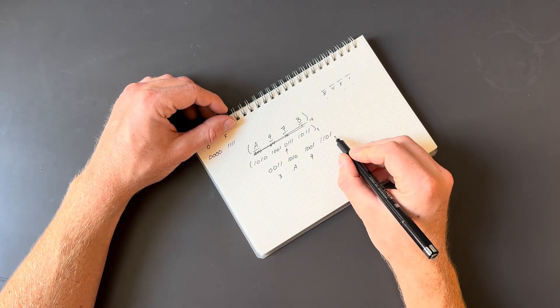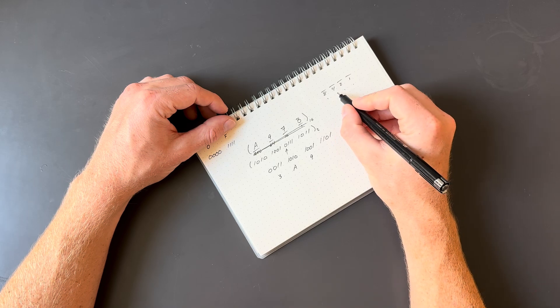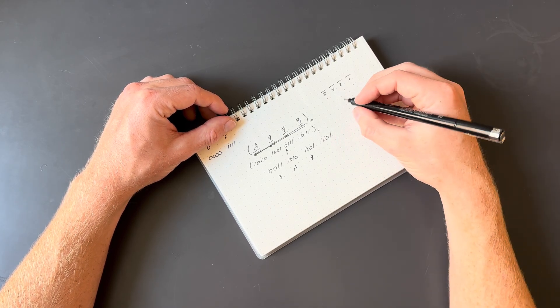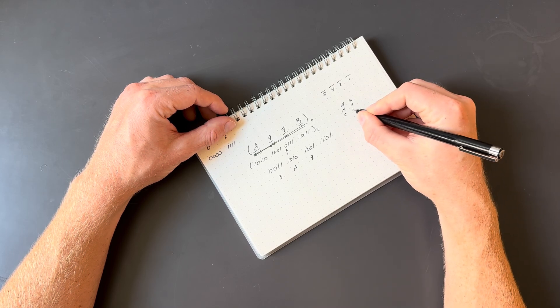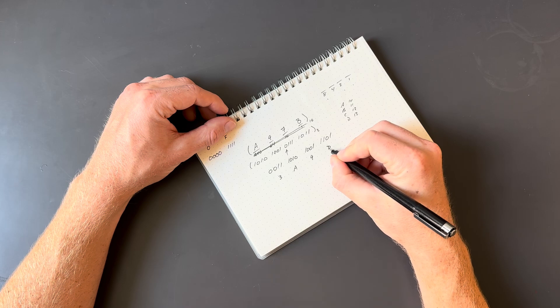And then we've got 1, 1, 0, 1. Or 8 plus 4 is 12, plus 1 is going to be 13. So if you remember, A is 10, B is 11, C is 12. That means D is 13. So this is a D.